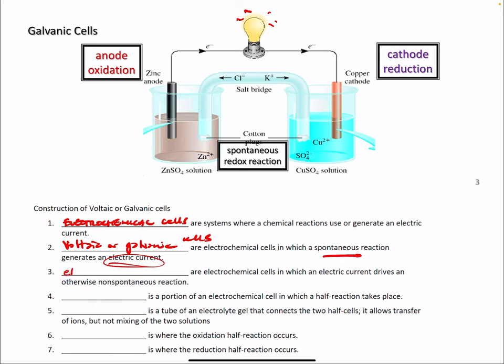The opposite is an electrolytic cell. Electrolytic cells are electrochemical cells in which an electric current drives an otherwise non-spontaneous reaction. So in a voltaic cell, the chemistry generates electricity. In an electrolytic cell, the electricity generates a chemical reaction.